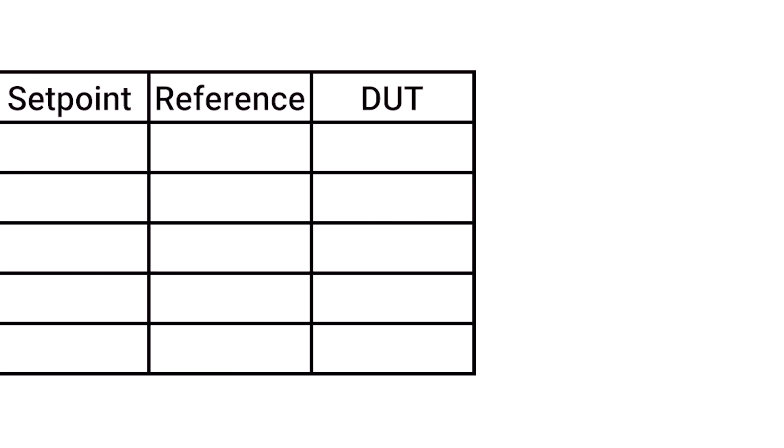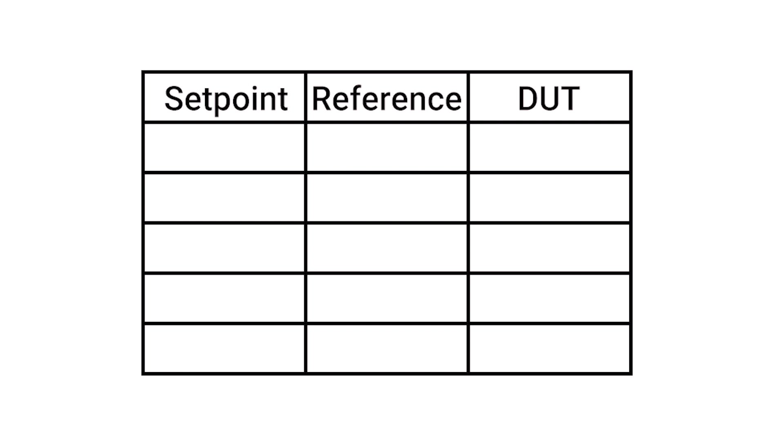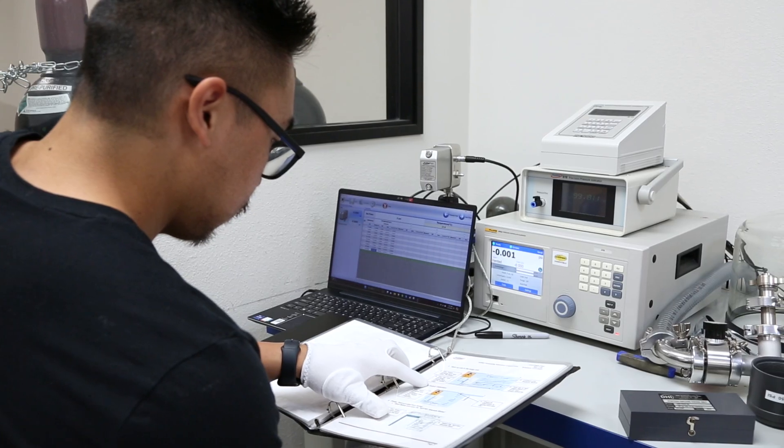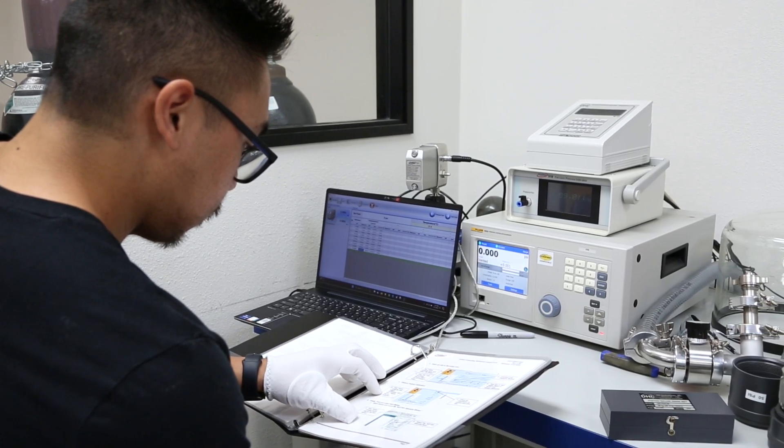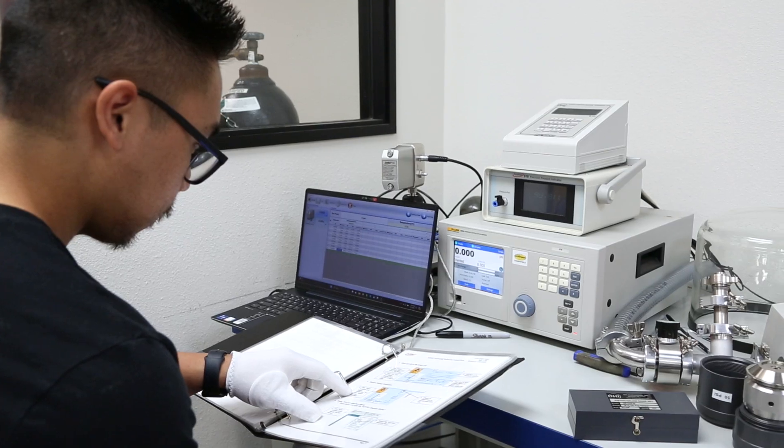Now, choose your set points for comparison. For simplicity's sake, we will do a 5-point round-trip calibration, with set points at 0, 150, 300, 150, and 0 psi. Your company or governing body should have written standards that determine the amount of set points you will use in your own calibrations.